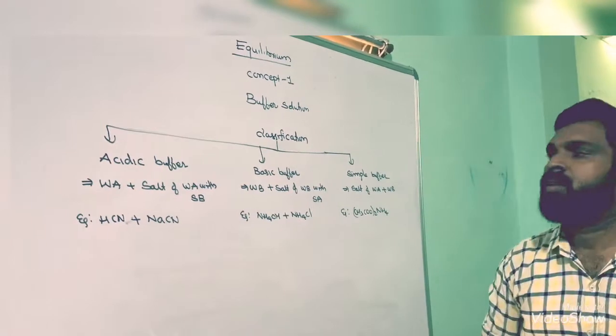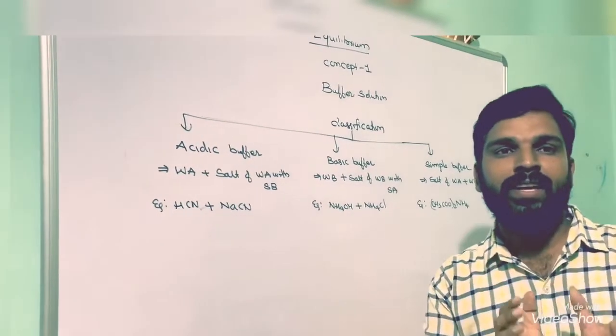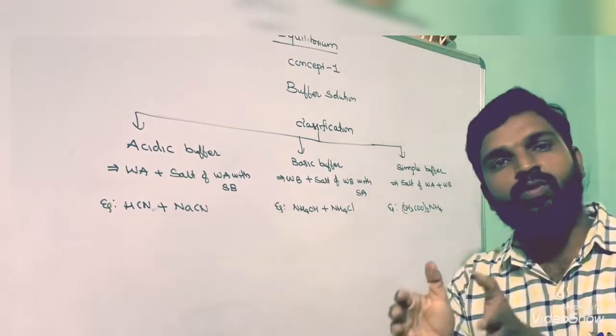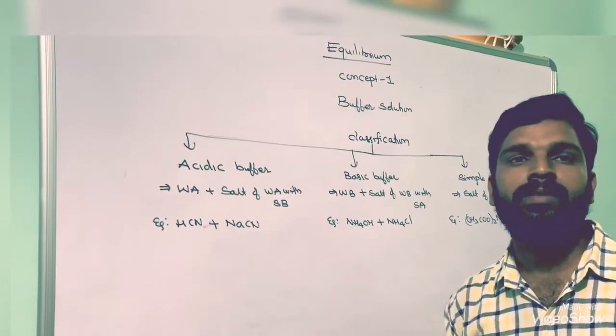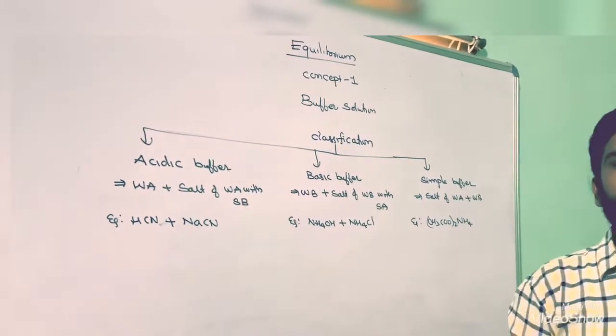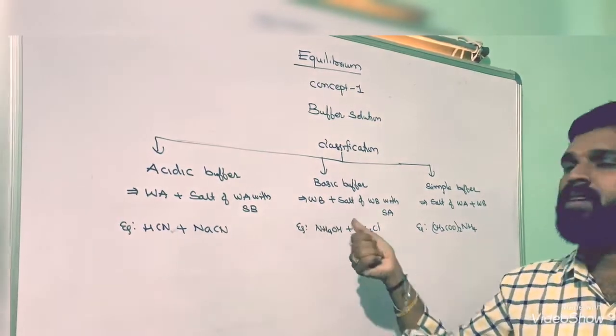buffer, and simple buffer. An acidic buffer is a weak acid and salt of weak acid with a strong base. Example: HCN and NaCN. A basic buffer is a weak base and salt of